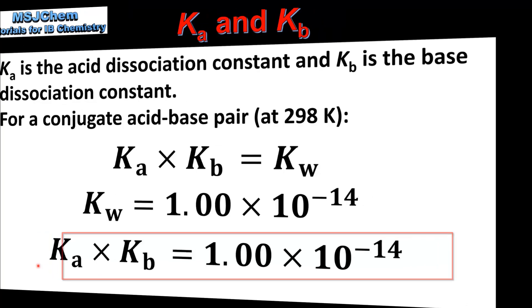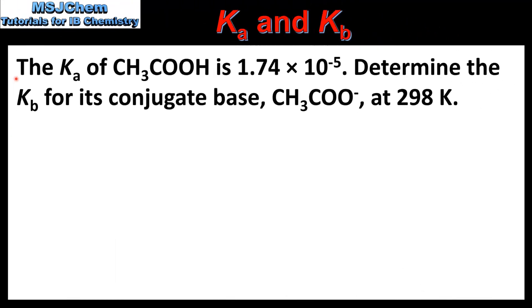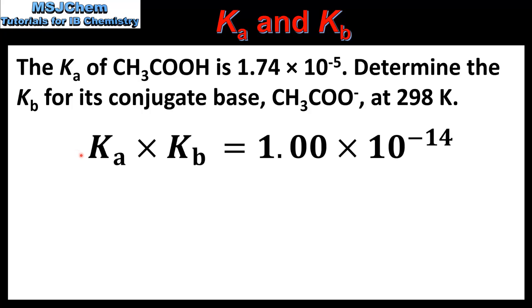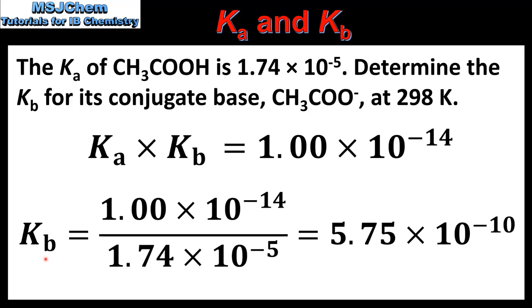Next we look at an example. The Ka of ethanoic acid is 1.74×10⁻⁵. Determine the Kb for its conjugate base, which is the ethanoate ion, at 298K. Since Ka × Kb = 1.00×10⁻¹⁴, to find the Kb for the conjugate base we divide Kw by the Ka of ethanoic acid, which gives us 5.75×10⁻¹⁰.